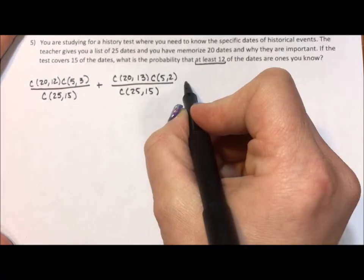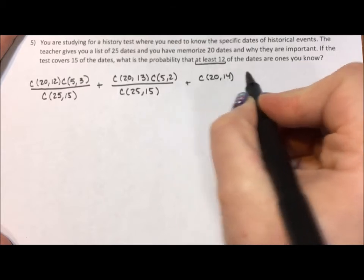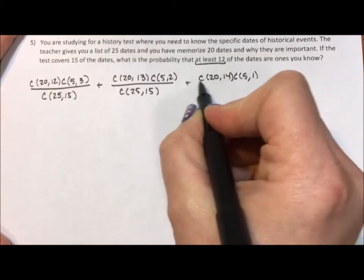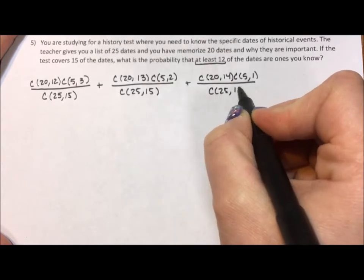But what if you know 14 of them? So that's the combination of the 20 you know taken 14 at a time times the combination of the 5 you don't know taken 1 at a time all divided by the combination of 25 taken 15 at a time.